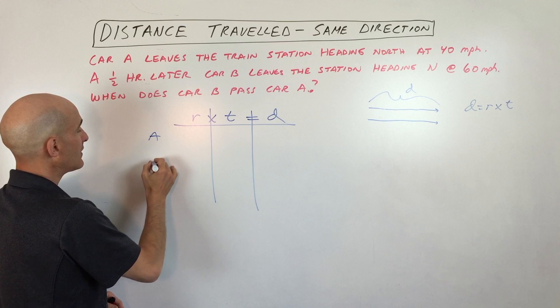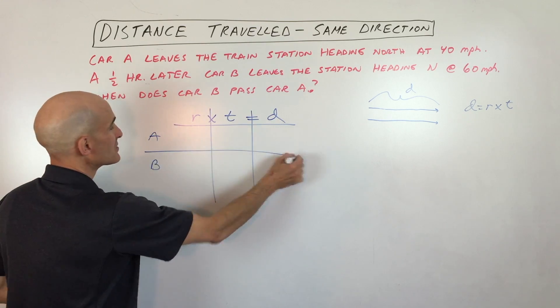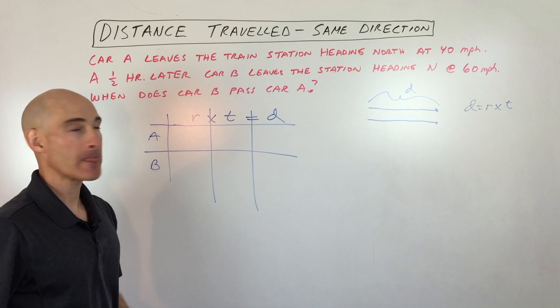And here we're going to have car A and here we're going to have car B. So I'm just going to divide these up. So you see our chart?